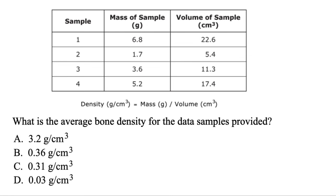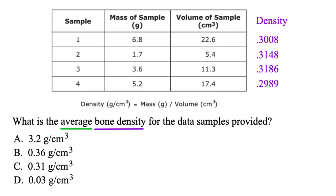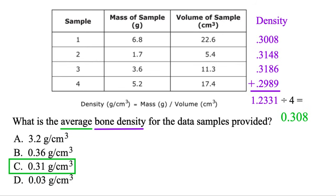Just one last one — this one's a two-parter. We're finding the average bone density. First, we need to find the bone density using the formula: density equals mass divided by volume. For the first sample, that's 6.8 divided by 22.6 — use the calculator for that. Then keep going: mass divided by volume for all the other samples. Next, find the average of those by adding everything up and dividing by how many you have — we're looking at 4 samples, so divide by 4. Rounding, that gives us 0.31 as our final answer.